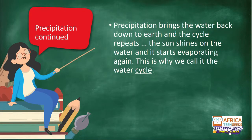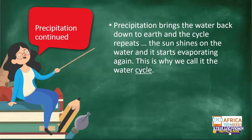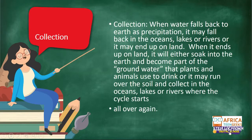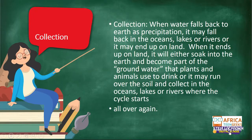Precipitation brings water back to earth and the cycle repeats — it's a continuous process. The water is back on land, and then it starts to evaporate again — that's why we call it a cycle. Now, when it rains, what happens to the water when it gets to the earth's surface or onto land? You can type your answers.